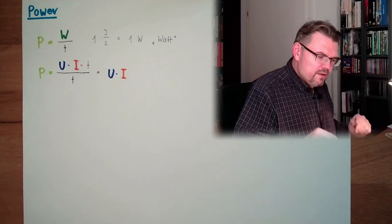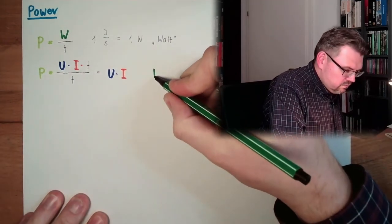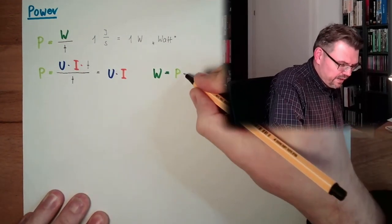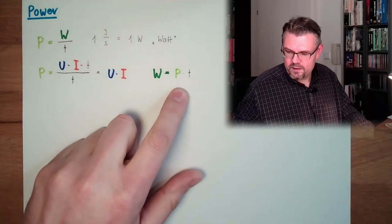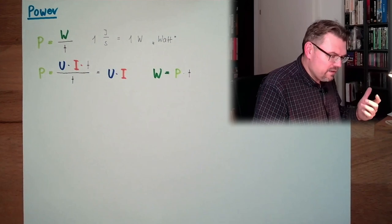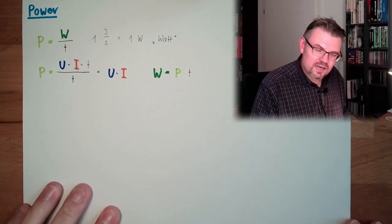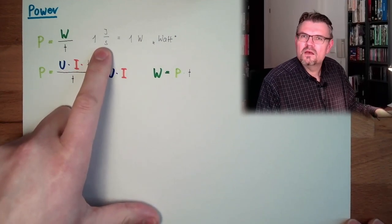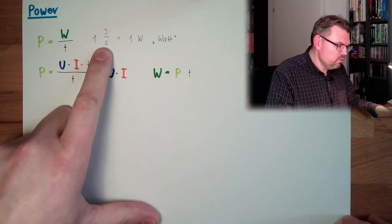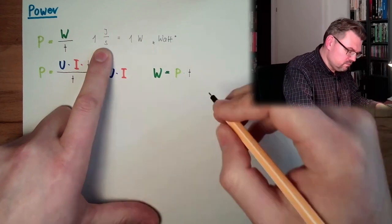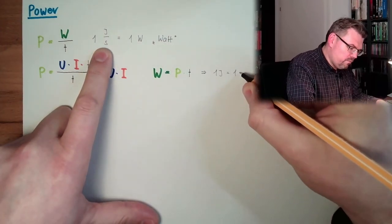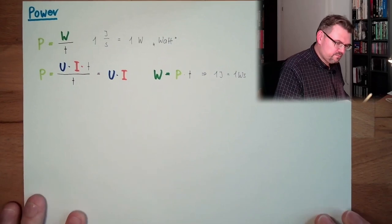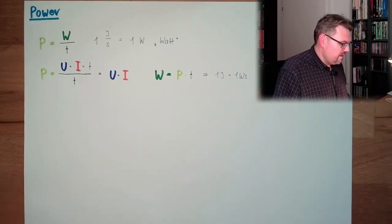And then they say, okay, the work equals power multiplied by time. This is the usual way. And this is also where the units are coming from. We usually don't talk about the joules. We talk about a watt second. Because one joule is one watt second. This comes from here. Last time.